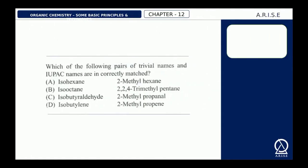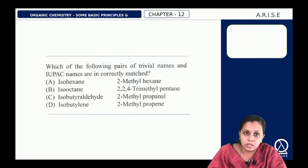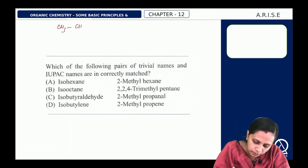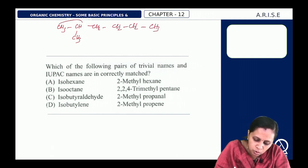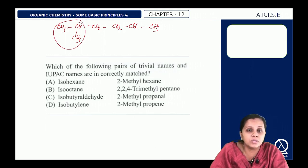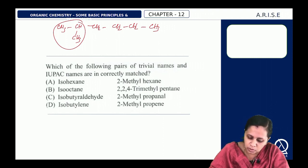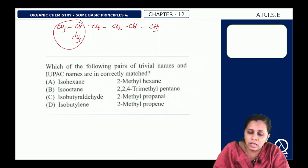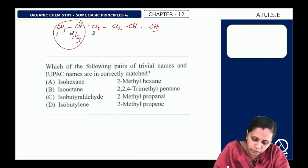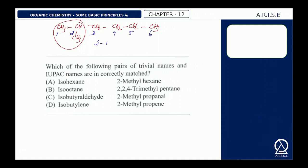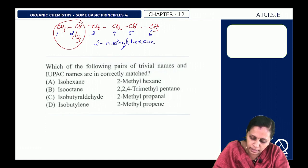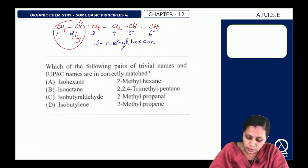Next question: which pair of trivial names and IUPAC names are correctly matched? Isohexane is CH3–CH(CH3)–CH2–CH2–CH2–CH3. The 'iso' prefix refers to the CH3–CH(CH3)– group. Select the longest carbon chain and number so the substituent gets the lowest possible number: 1, 2, 3, 4, 5, 6. The IUPAC name is 2-methylhexane. So the first option is correct — isohexane is 2-methylhexane, which is option A.